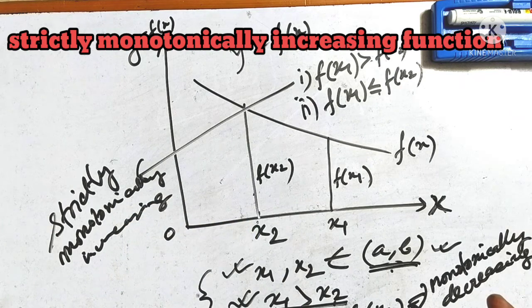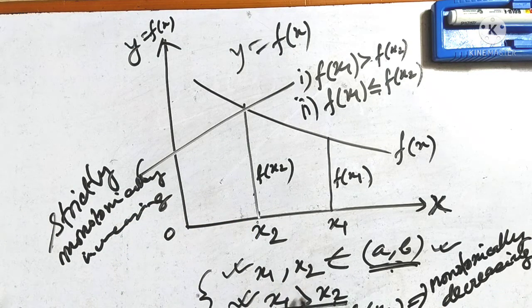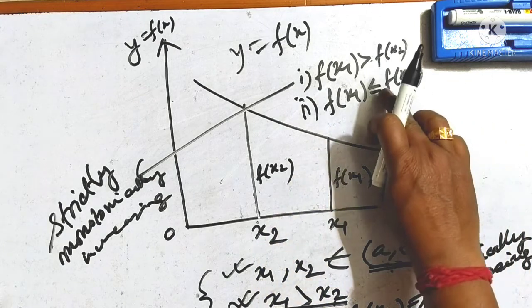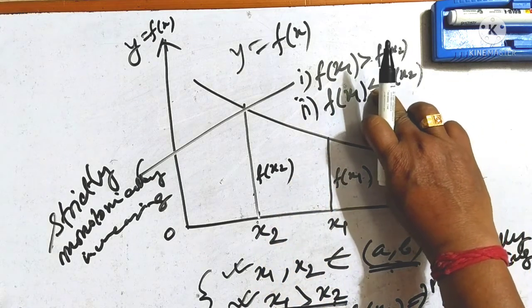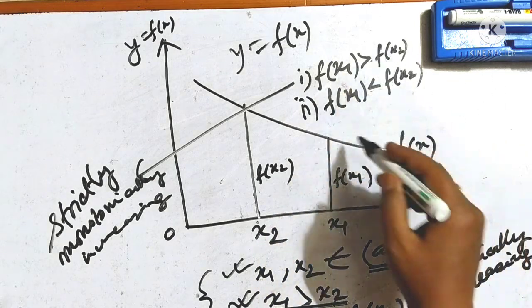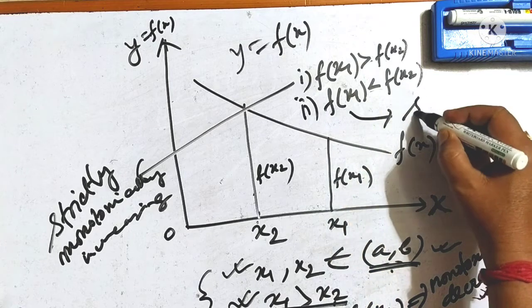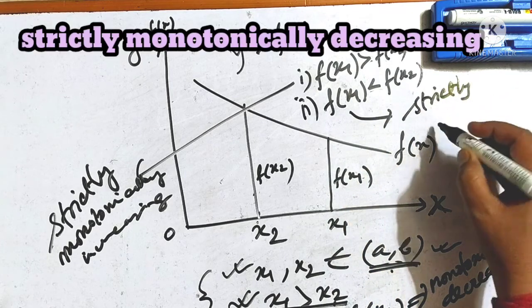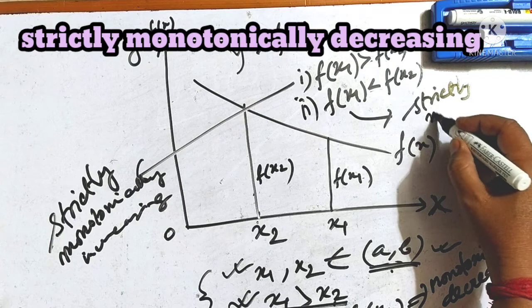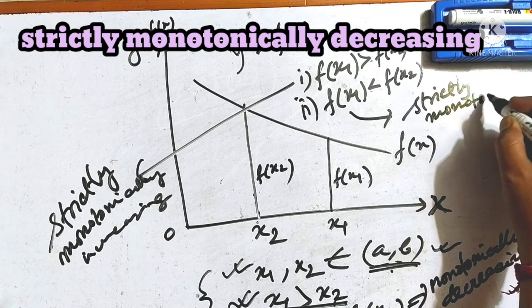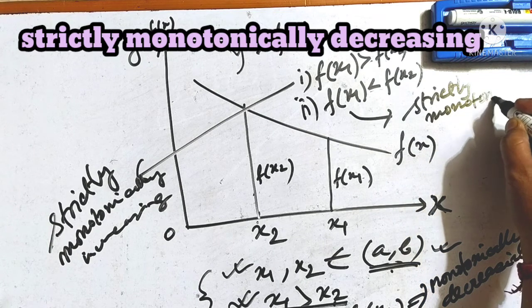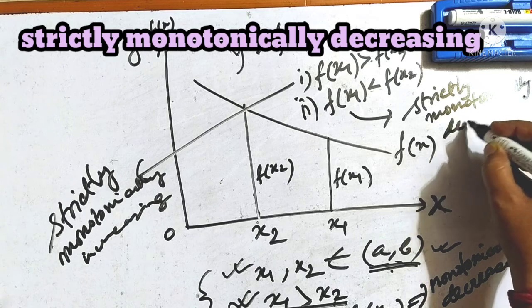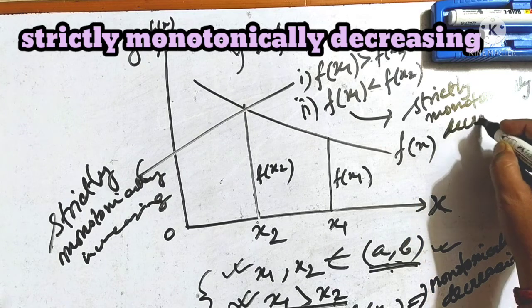But if the condition is the same and fx1 is strictly less than fx2, then we call it a strictly monotonically decreasing function.